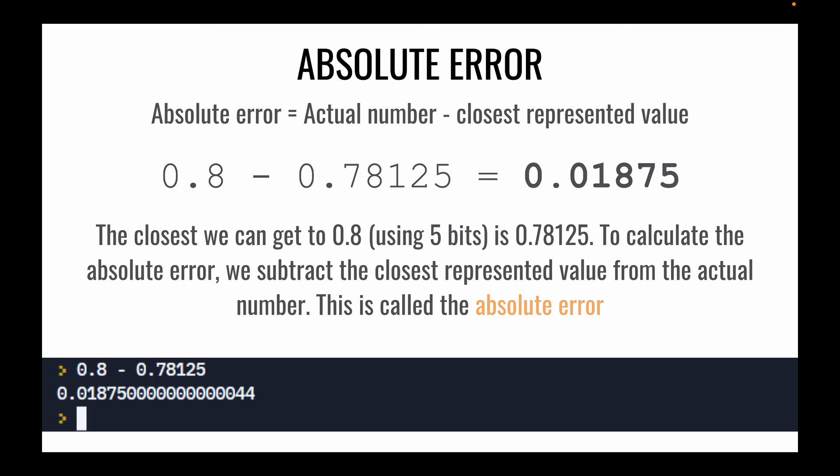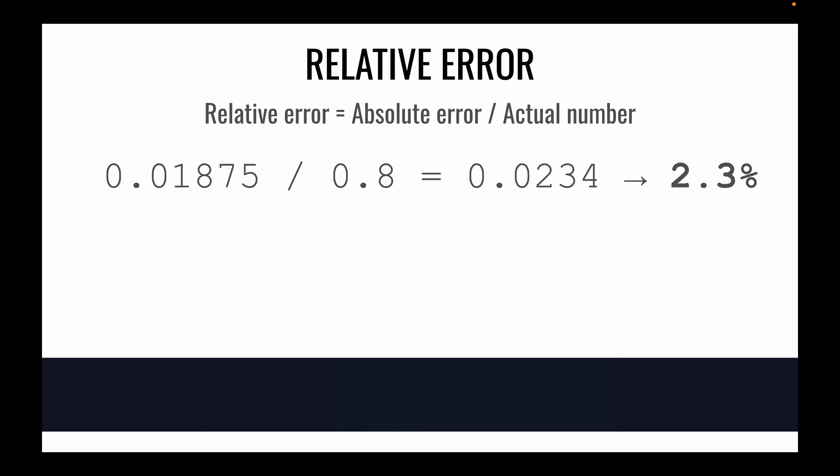Well we need to figure out the absolute error. The formula for the absolute error is the actual number minus the closest represented value. So in this case 0.8 minus 0.78125 which is the closest represented value that we can get and we end up with an absolute error of 0.018. To get the relative error we just need to go ahead and divide that by the actual number. So the absolute error divided by the actual number would give us 2.3 percent.